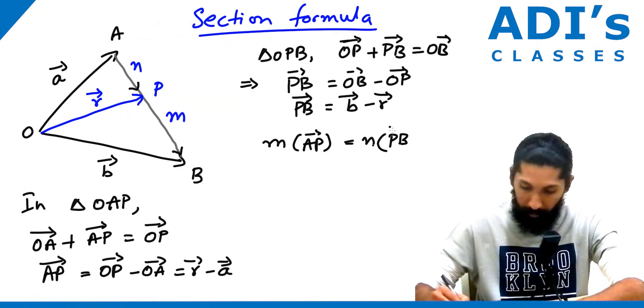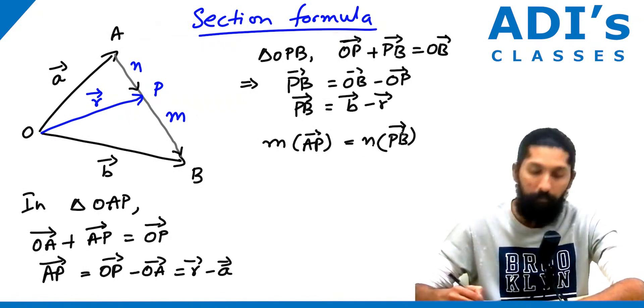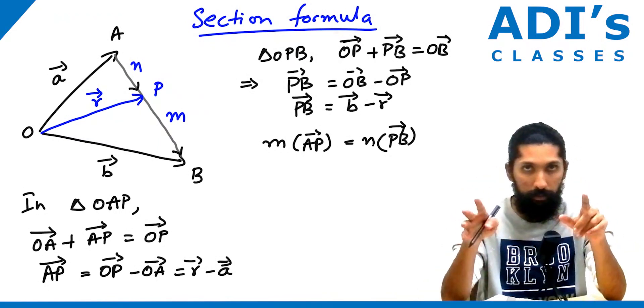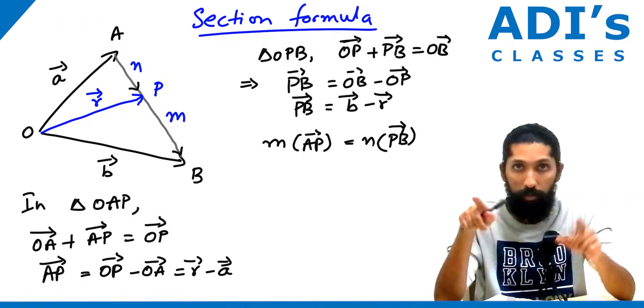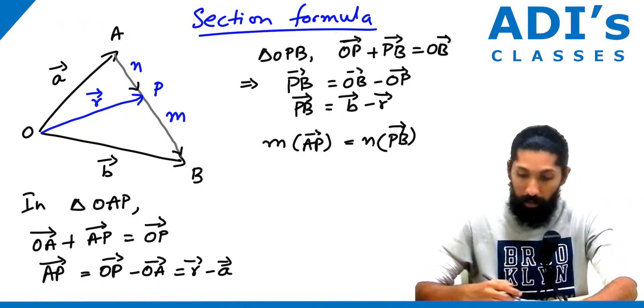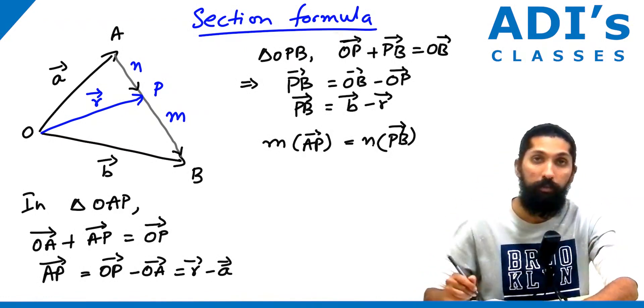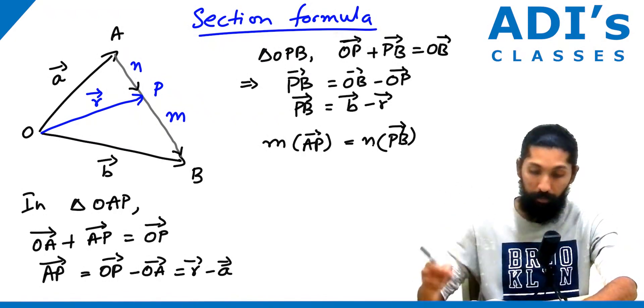For the section formula, we have to take the alternate and multiply. So M into AP equals N into PB.